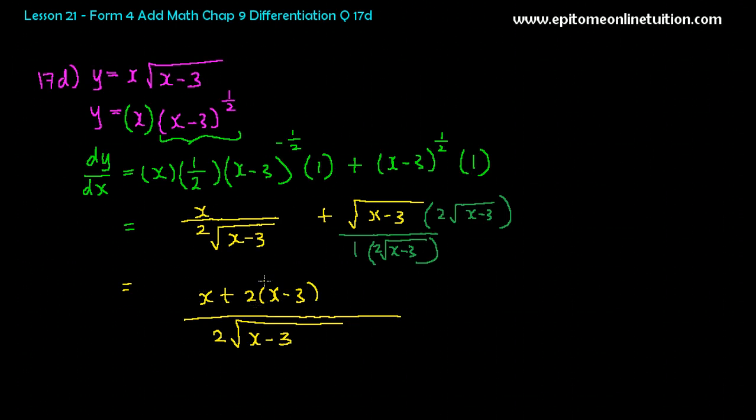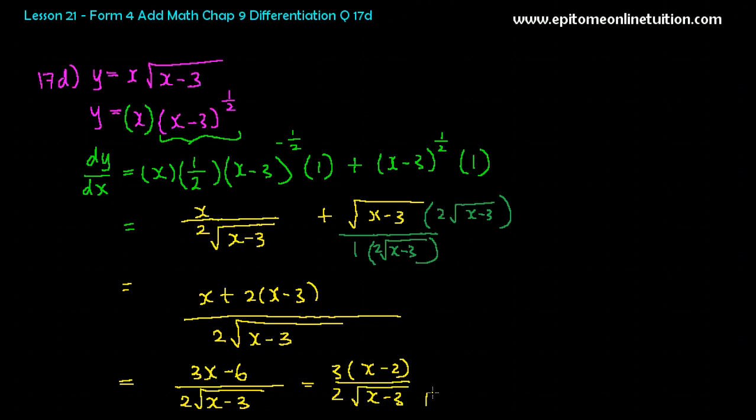So we can simplify. You can simplify this. So this becomes x plus 2x minus 6. So that is 3x minus 6 over 2 root of x minus 3. Okay? So if you can simplify this, then take this out. There's a 3 here: x minus 2. And a 2 with a square root of x minus 3. And this is the final answer in the simplest form. Factorize to the most that you can.